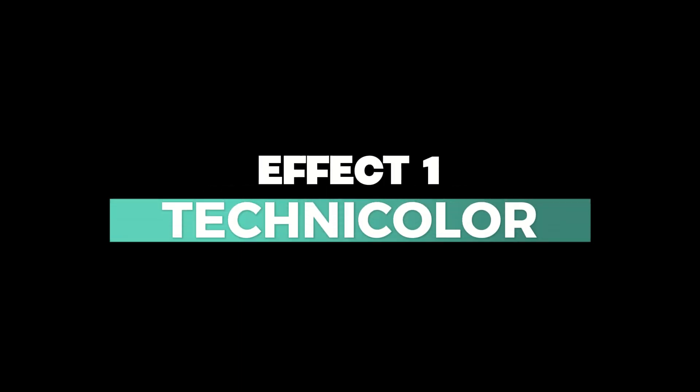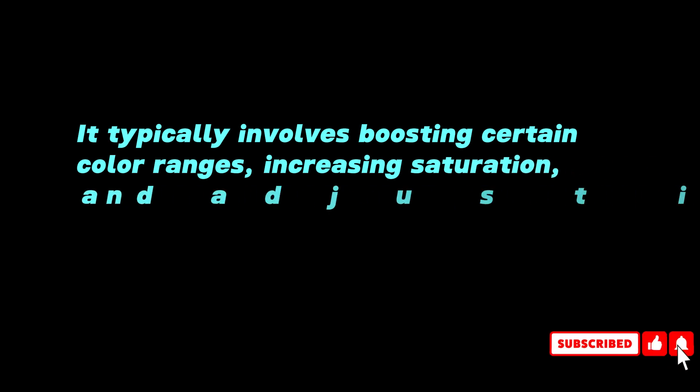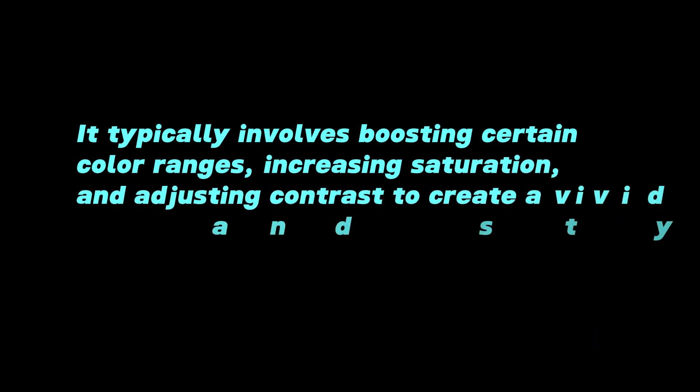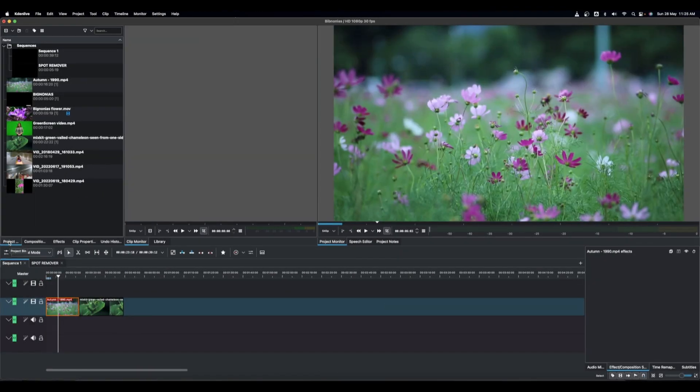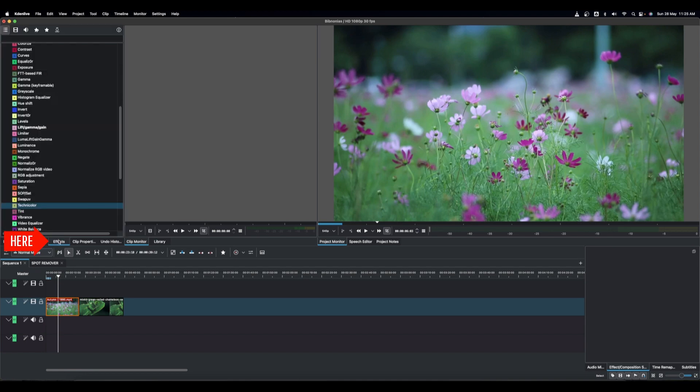The first effect is Technicolor. The Technicolor effect typically involves boosting certain color ranges, increasing saturation, and adjusting contrast to create a vivid and stylized appearance, as you can see in this video. Let's look at how to apply it in Kdenlive — make sure to go to the Effects panel.